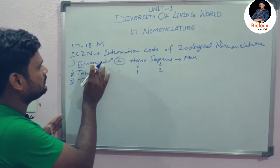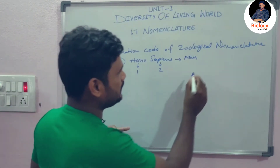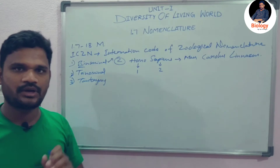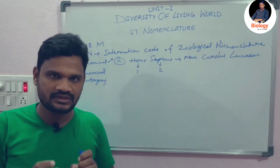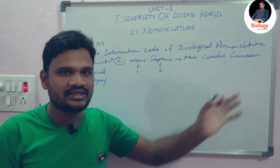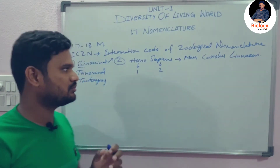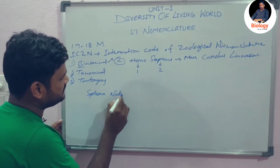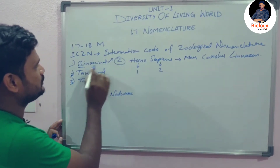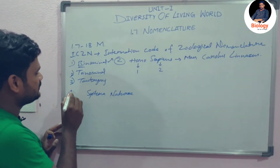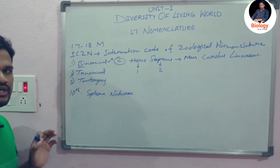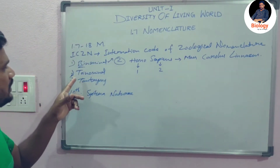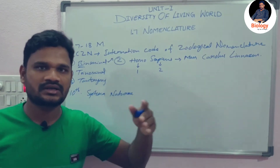For the first time, binomial nomenclature was introduced and popularized by Carolus Linnaeus. He introduced this process in his publication — the tenth edition of a book called Systema Naturae. In this book, he introduced the binomial nomenclature process. According to the ICZN rules and regulations, binomial, trinomial, and tautonymy nomenclature processes came into existence.